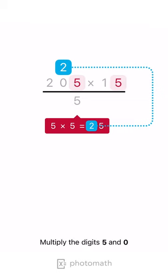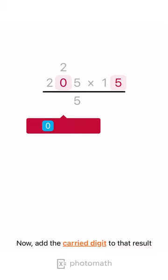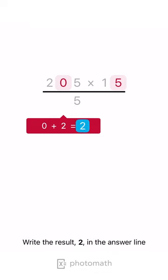Multiply the digits 5 and 0. Now, add the carried digit to that result. Write the result, 2, in the answer line.